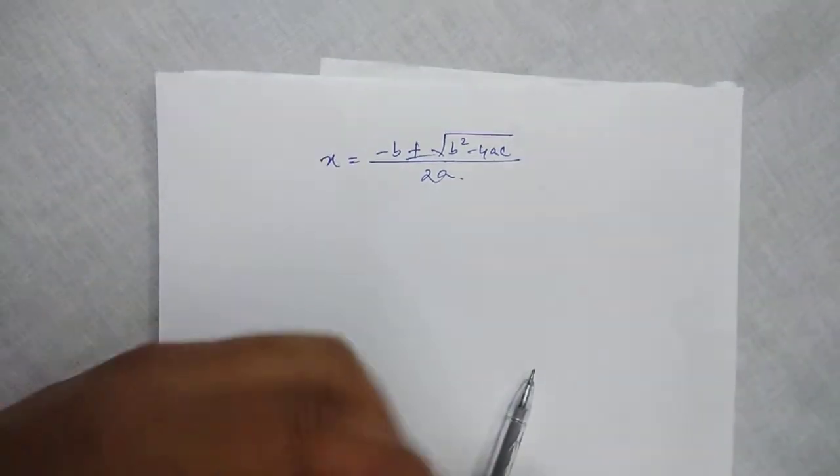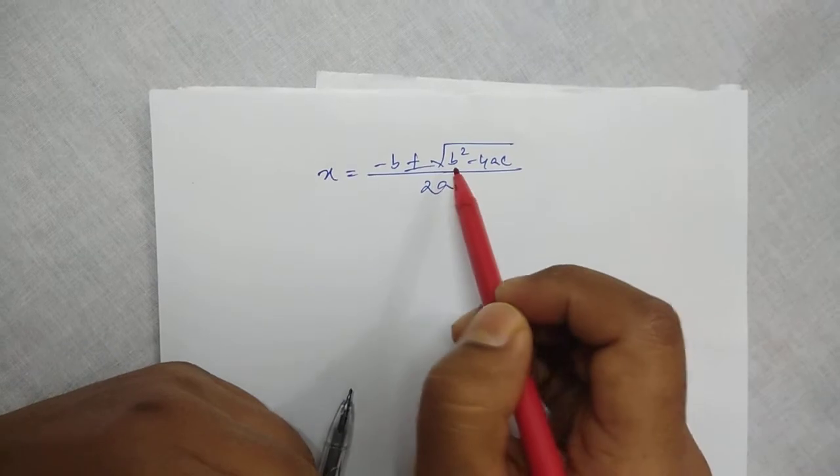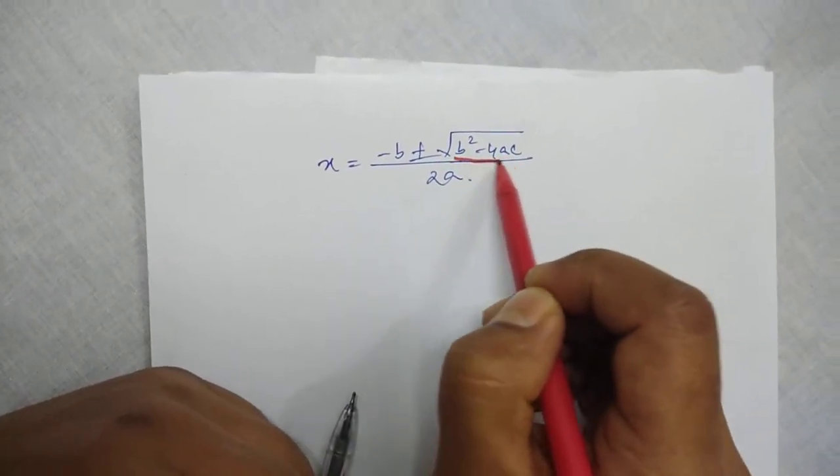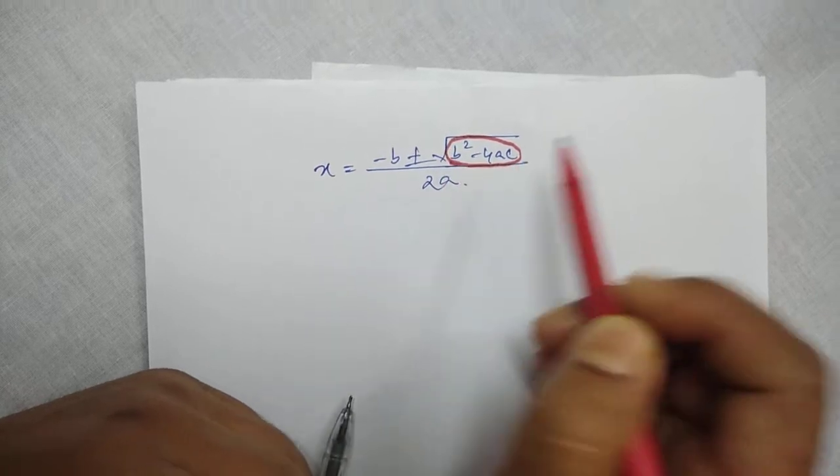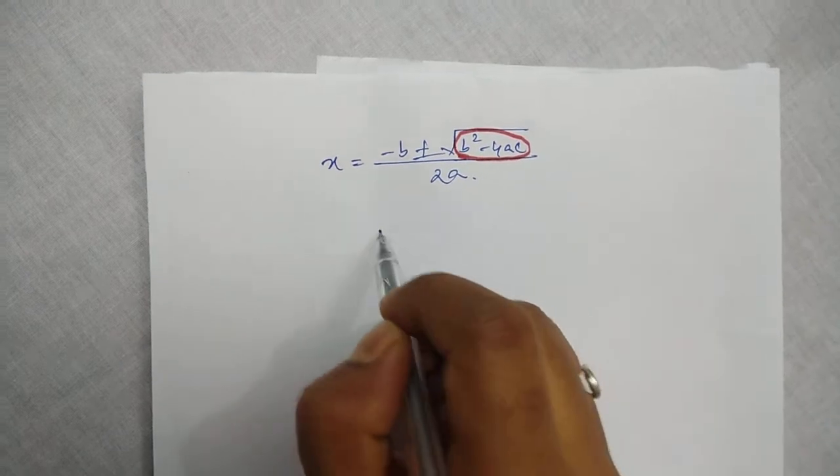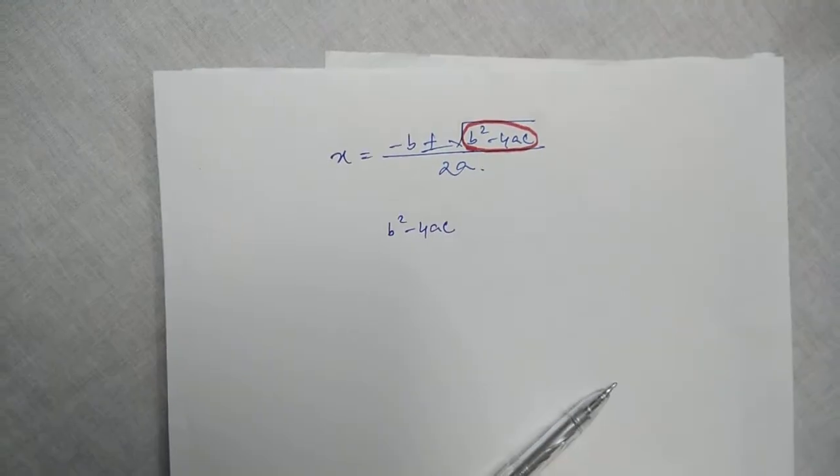Now, today's class is in continuation of my last class. This under the square root, b square minus 4ac, plays a very important role. This portion, b square minus 4ac, is called discriminant.